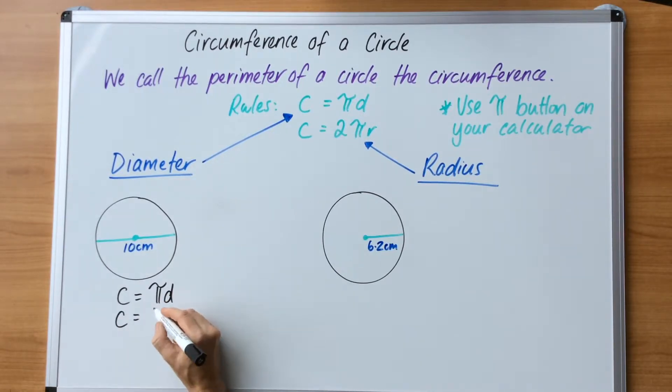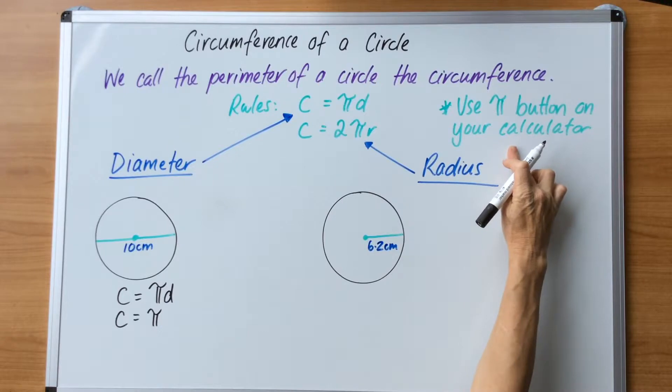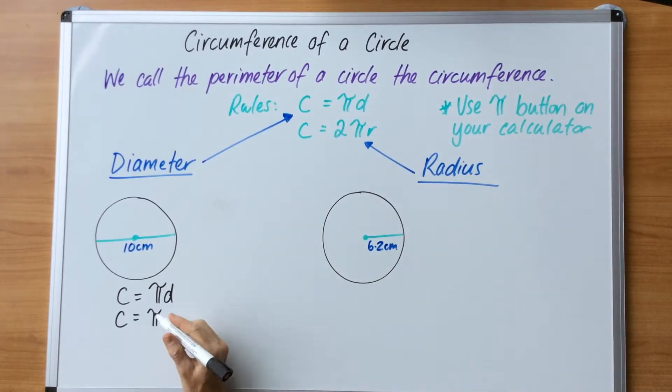So we drop the pi symbol down and we're going to use the calculator. We use our pi button on your calculator, we multiply by 10 which is the diameter. So get your calculator, find the pi button, hit the pi button, multiply it by 10 and you will get an answer that's 31 point...